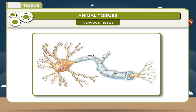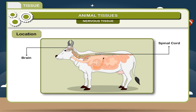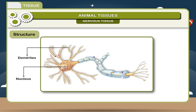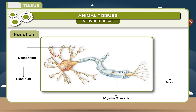Nervous tissue is composed of nerve cells called neurons. Nerve cells are present in the brain and spinal cord. The main body of the neuron having a nucleus is the cell body, with branching dendrites and a long cytoplasmic structure called the axon. The dendrites connect one neuron to another. The axon transmits impulses to an organ or collects impulses from the sensory organs. They transfer information from one part of the body to another.